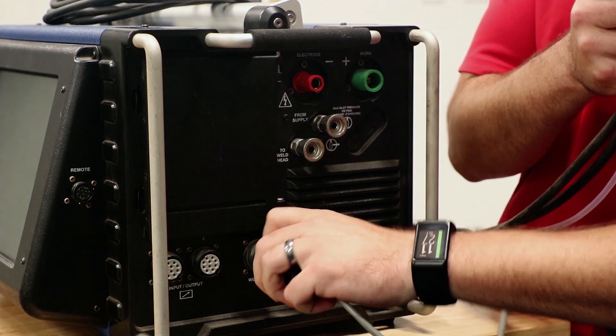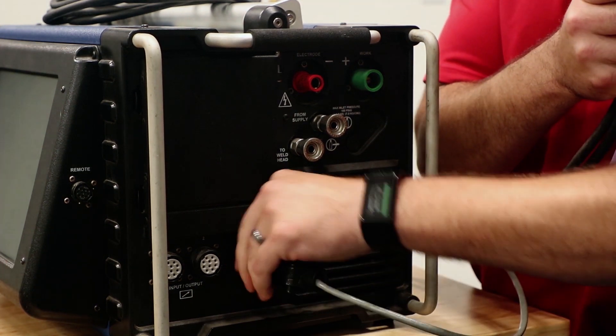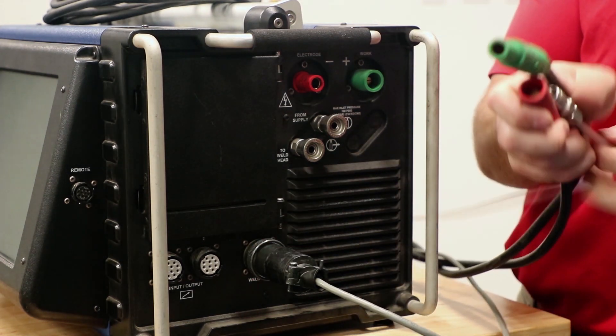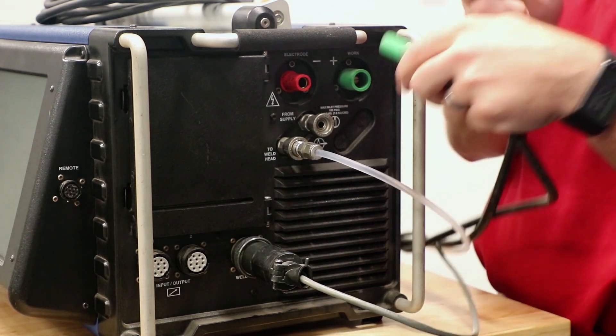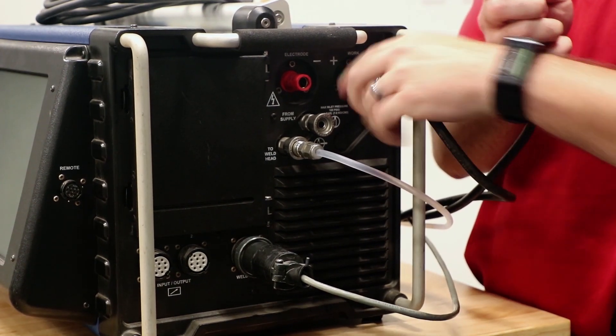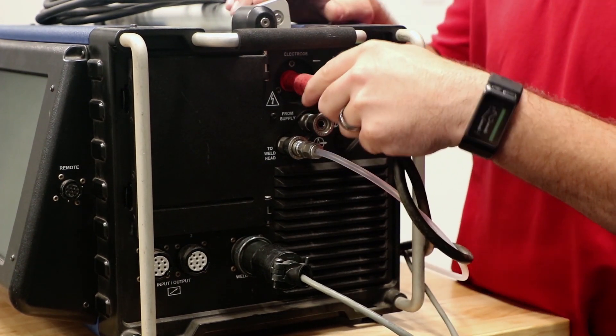Connecting a weld head is as easy as four connections. There's a cable for a remote, which is how the M200 actually drives the equipment, a purge connection for OD purge gas, and two power connections for the current to travel down to the electrode.